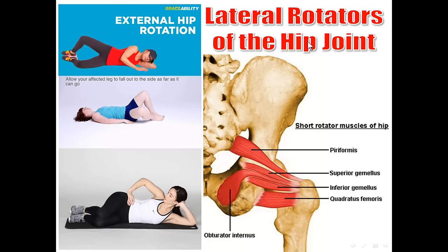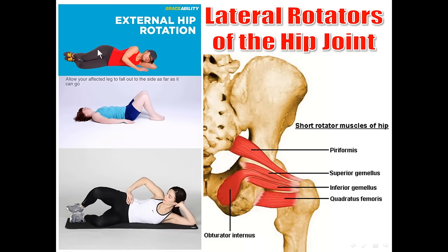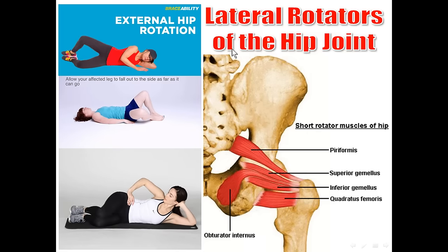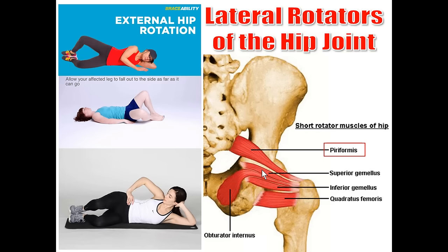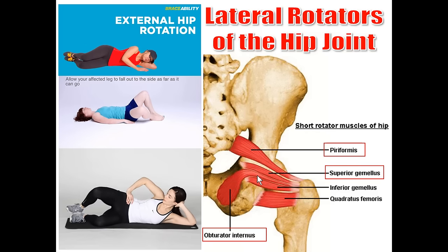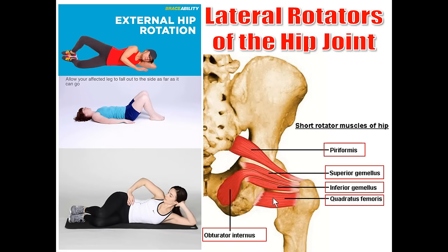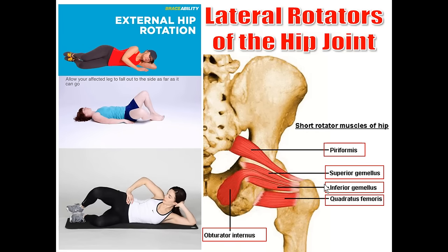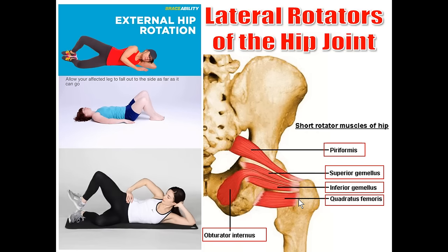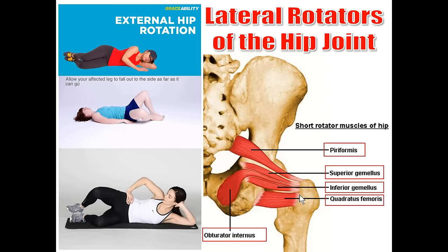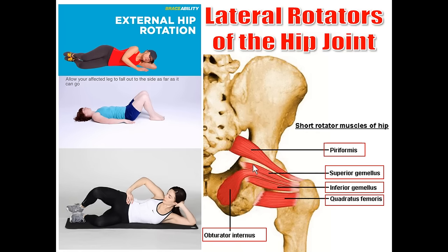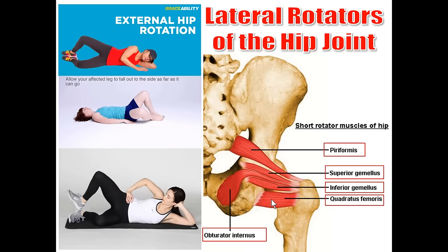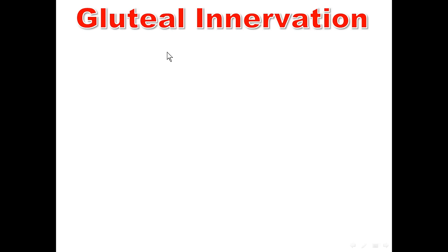Lateral rotation of the hip joint is produced by small muscles in the gluteal region. In order, they are: piriformis, superior gemellus, obturator internus, inferior gemellus, and quadratus femoris. These muscles are inserted into the greater trochanter of the femur and they laterally rotate the femur. Regarding nerve supply in the gluteal region, there are four nerves: superior gluteal nerve, inferior gluteal nerve, nerve to obturator internus, and nerve to quadratus femoris.